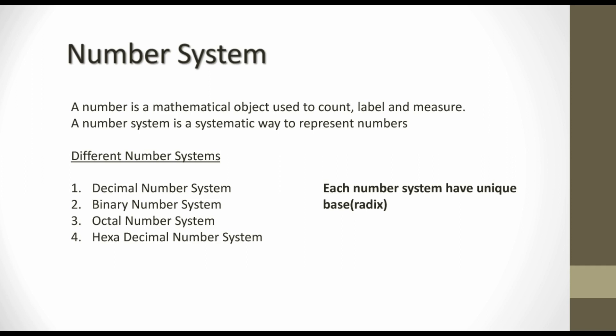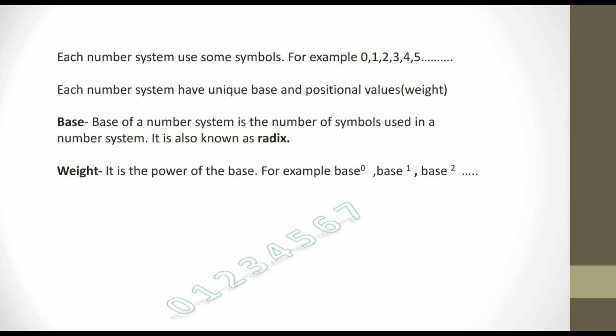Each number system has a unique base, that is known as radix. The decimal number system has one radix, binary number system has another radix, octal number system has another radix, and hexadecimal number system has another radix or base. Each number system uses some symbols, for example 0, 1, 2, 3, 4, 5, etc. Each number system has a unique base and positional values, or weight.